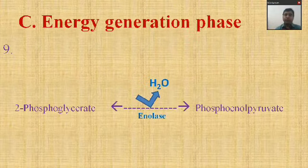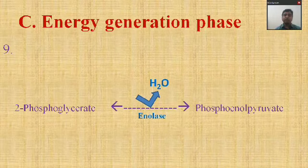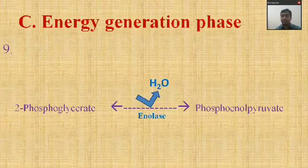Reaction nine of the energy generation phase: 2-phosphoglycerate is converted into the energy-rich molecule phosphoenolpyruvate (PEP). There occurs loss of H₂O, and the reaction is catalyzed by the enzyme enolase.